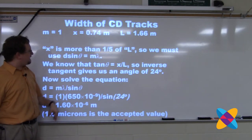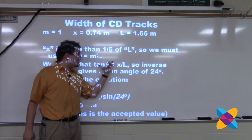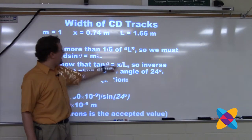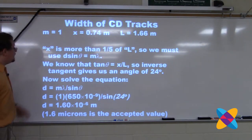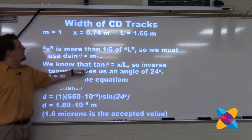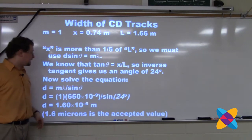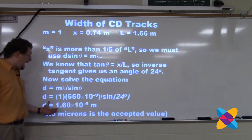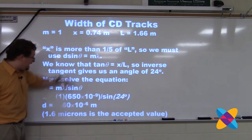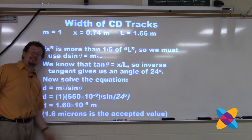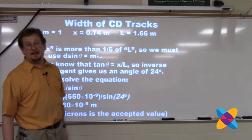To get sine theta: tan theta equals x over L — that's exact, not an approximation. I plug in my x and L, take the inverse tangent, and get 24 degrees. Plugging in 24 degrees, m equals 1, and the wavelength of red light, I get 1.6 microns — exactly. I've never been this close to a known value in my life, except for the speed of sound in another lab.